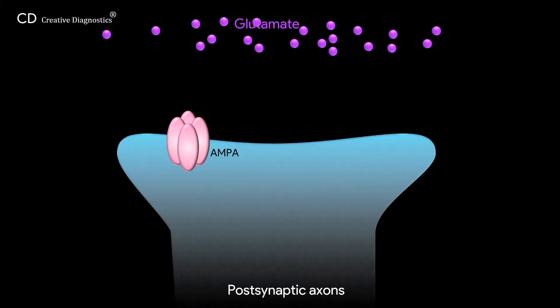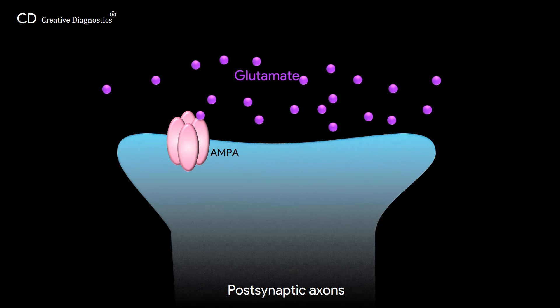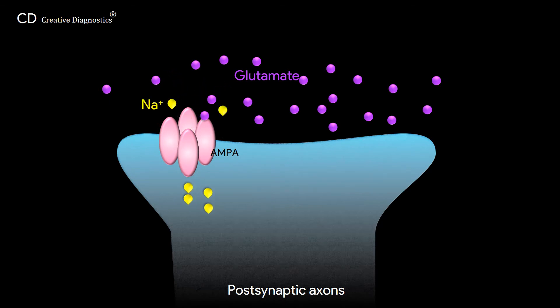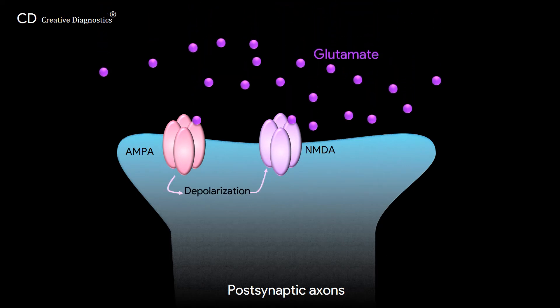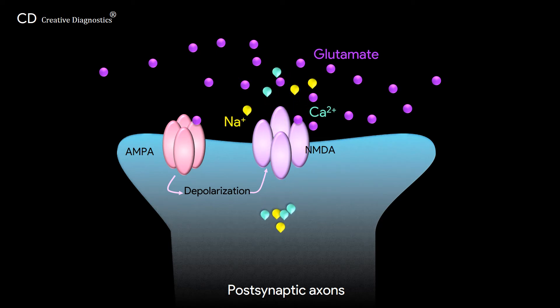AMPA receptors are the first target of glutamate released from presynaptic terminals, leading to postsynaptic membrane depolarization through the influx of sodium, and therefore play a fundamental role in synapse maturation and plasticity. Following this initial AMPA receptor-mediated depolarization, NMDA receptors are permeable to sodium and calcium ions to mediate excitatory transmission upon glutamate binding.